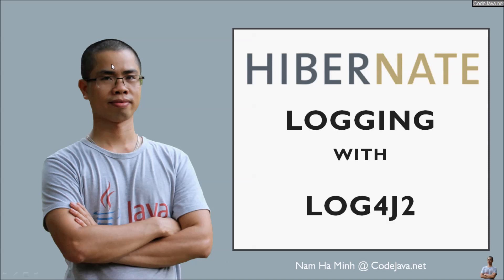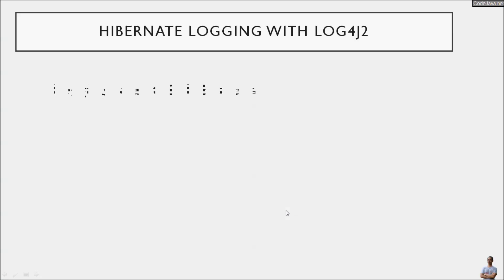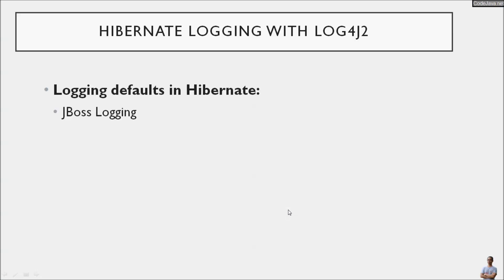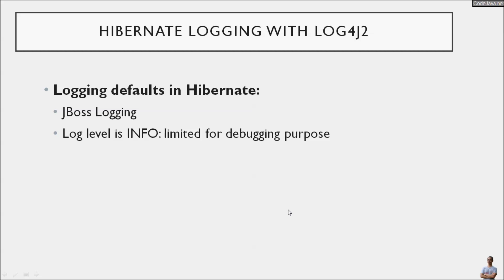Hello and welcome to the video: Hibernate logging with Log4j2. In this video you will learn how to configure the Hibernate framework to use the Log4j2 framework to have more control over the logging information generated by Hibernate. By default, Hibernate uses the JBoss logging API and the default log level is info.